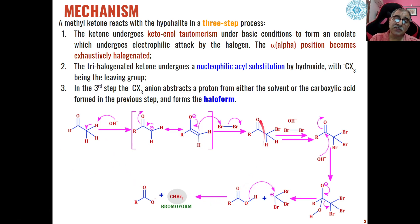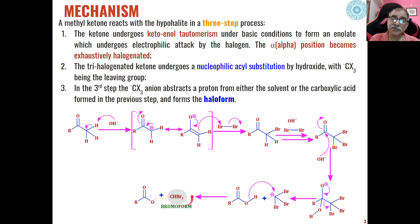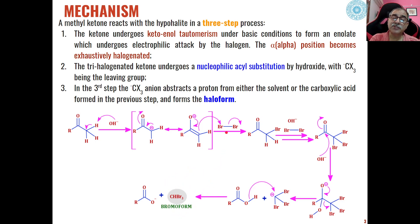This reaction is known as the haloform reaction. When we are using bromine, bromoform will be formed. If we are using iodine, iodoform will be formed. And if we are using chlorine, chloroform will be formed.